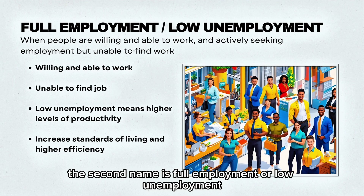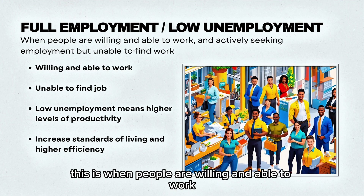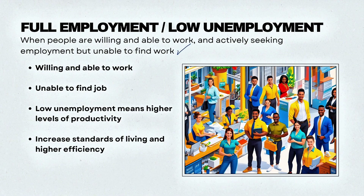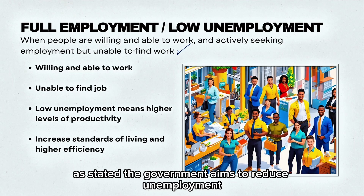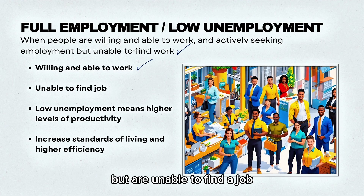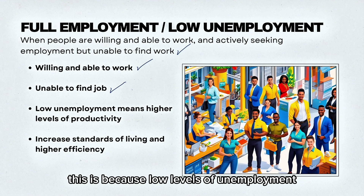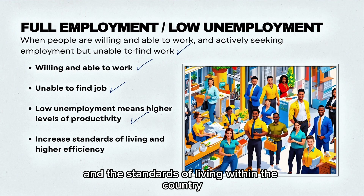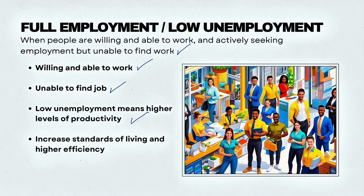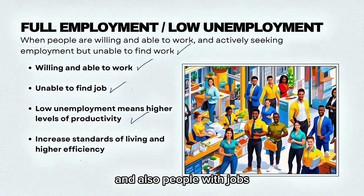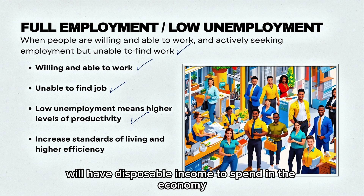The second aim is full employment or low unemployment. This is when people are willing and able to work and are actively seeking employment but are unable to find work. The government aims to reduce unemployment — these are the people that are willing and able to work but are unable to find a job. Low levels of unemployment means higher levels of productivity and the standards of living within the country will increase, due to the productive nature of employment and also people with jobs will have disposable income to spend in the economy.